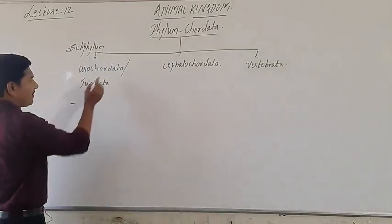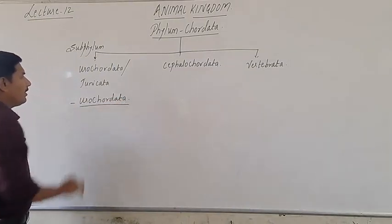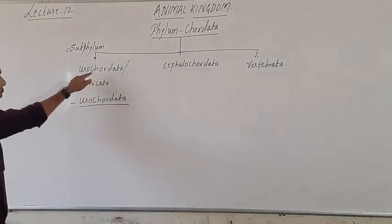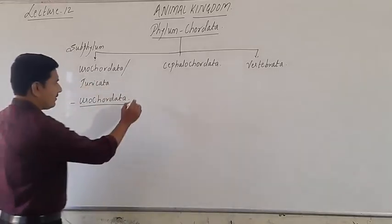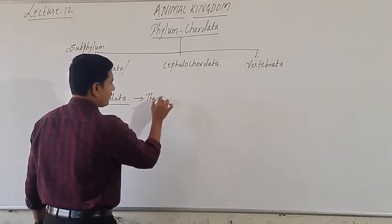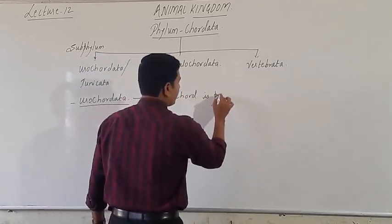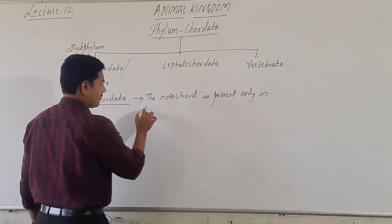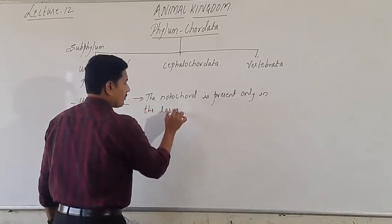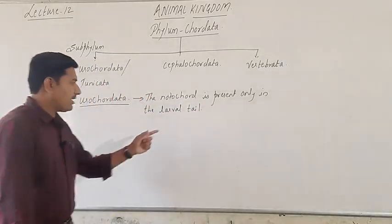Let us take the part of Urochordata. Euro refers to the tail region. So Urochordata means the notochord is present only in the larval tail. The notochord is present only in the larval tail region — that is why the name 'uro,' euro referring to tail.